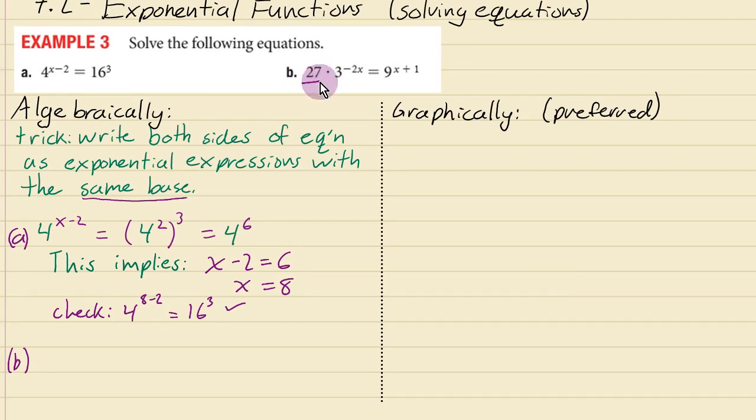So I'm going to start with the 27 and rewrite that as 3 to the power 3 and then you also have that 3 to the power negative 2x there and that is the same as 9 to the power x plus 1. Well how about I rewrite that 9 as 3 to the power 2.